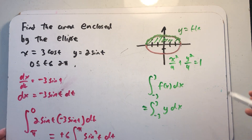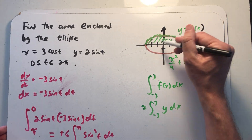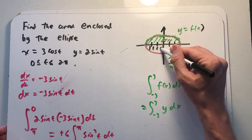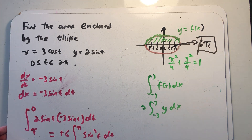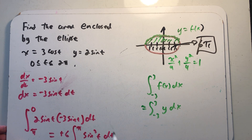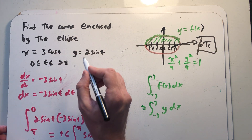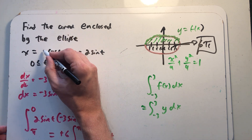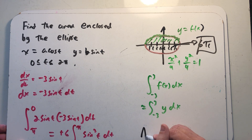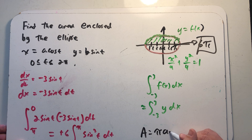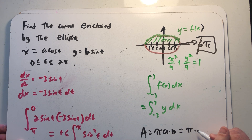Coming back to the diagram, that 3π was only half of the area, so the whole area is 6π. As a challenge, you can go back through the problem replacing 3 with a and 2 with b to establish that the area enclosed by an ellipse is π times a times b. For us, that's π times 3 times 2, which is 6π.